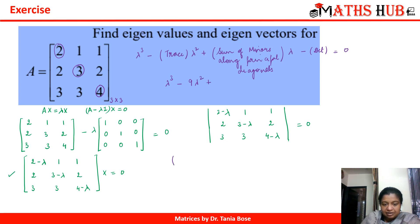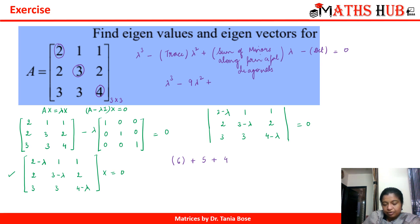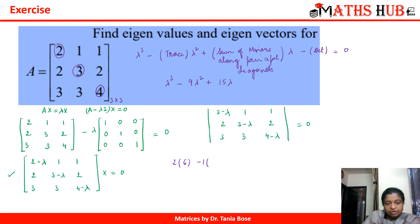Now for the sum of the diagonal minors: the minor of the (1,1) entry gives 3×4 − 2×3 = 12 − 6 = 6; the minor of the (2,2) entry gives 2×4 − 1×2 = 8 − 2 = 6, wait — 8 minus 3 = 5; and the minor of the (3,3) entry gives 2×3 − 1×3 = 6 − 2 = 4. So 6 + 5 + 4 = 15, giving +15 lambda. The determinant is 2×(12−6) − 1×(8−6) + 1×(6−9) = 12 − 2 − 3 = 7, so the constant term is −7.